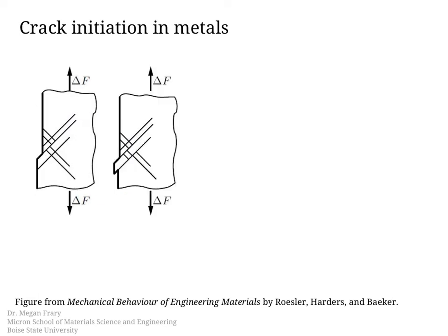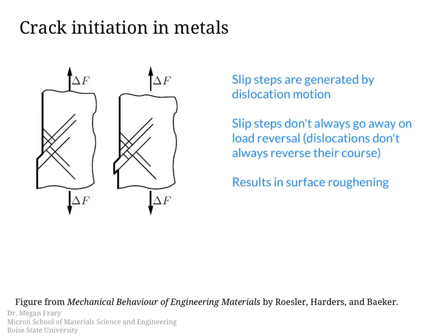As dislocations move to or from the surface of the specimen, that slip can result in a step in the surface. However, when the load is reversed, the slip is not always reversed — a different dislocation may be activated, for example. As a result, we can end up with these non-reversed slip steps at the surface of the material. Over time, this process of continued slip and formation of slip steps results in surface roughening, which has been experimentally observed during fatigue loading.